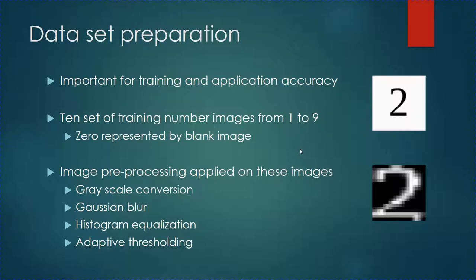The first step is dataset preparation. This is important as training data plays a huge role in improving accuracy. A more elaborate training dataset results in better optical character recognition. I prepared a dataset consisting of 10 sets of number images from 1 to 9, extracted from actual Sudoku puzzles. For representing the number 0, we use a blank image. These number images are then cropped to their contours using contour reduction, and image preprocessing is applied to increase classifier accuracy.